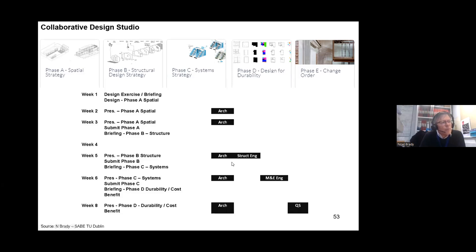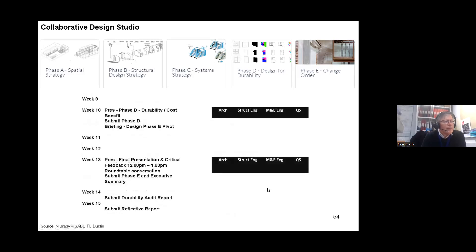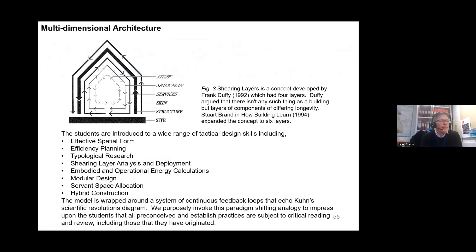We have the architect at the start; the structural engineer comes on board regarding structure; the M&E engineers come on board when we start talking about systems; and then the QS starts talking about durability, cost analysis, and cost-benefit analysis. At the latter part of the design phases, we have full-team inputs from the durability and cost-benefit piece, and then on the final presentation and critical feedback. It's very important that this collaborative design studio is a safe space designed to allow for failure — and to fail rapidly — so that we can actually learn from that. The students are introduced to a wide range of technical design skills: effective spatial planning, efficiency planning, typological research, shearing layer analysis, embodied and operational energy calculations, modular design, servant space allocation, and hybrid construction.